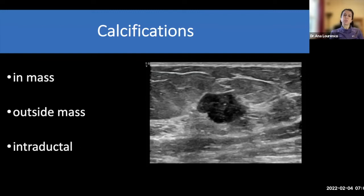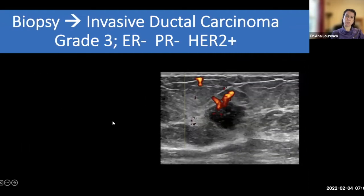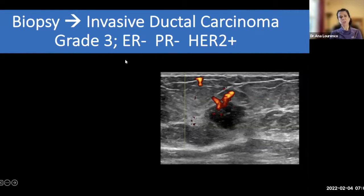We don't frequently see calcifications on ultrasound, but when we do it's important to pay attention — are they in the mass, outside the mass, or perhaps intraductal? In this case we do see a calcification within the mass. So we described it as round with microlobulated margins, hypoechoic, no posterior features, and an associated calcification in the mass. Those are all suspicious features, and at biopsy this turned out to be invasive ductal carcinoma — grade three, estrogen and progesterone receptor negative, but HER2-enriched.